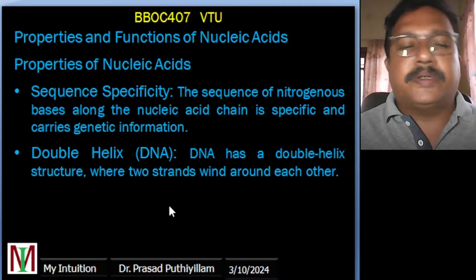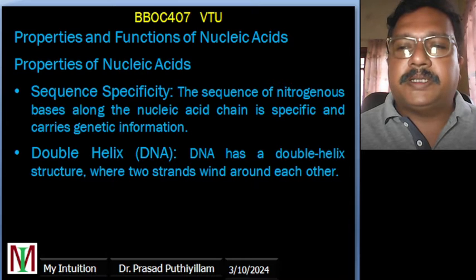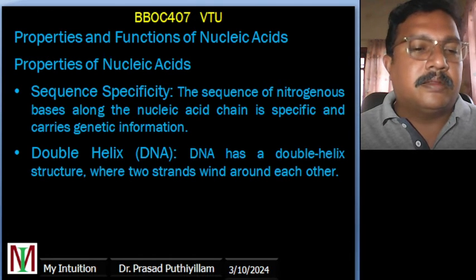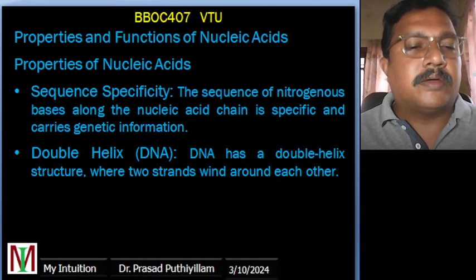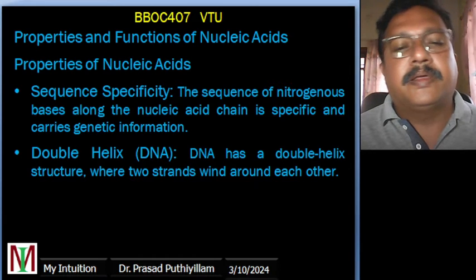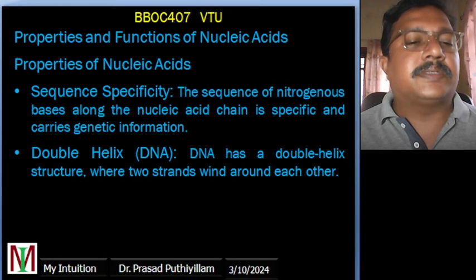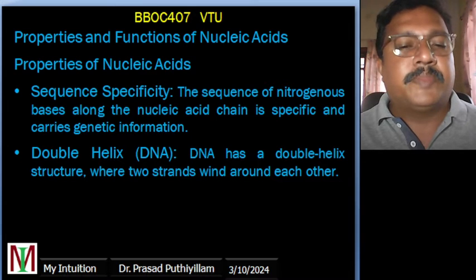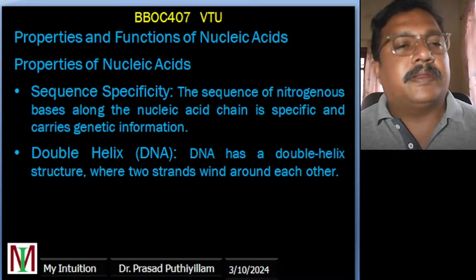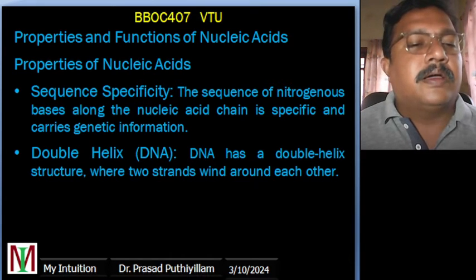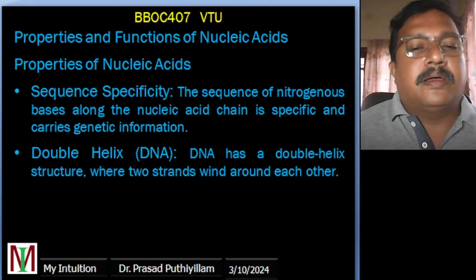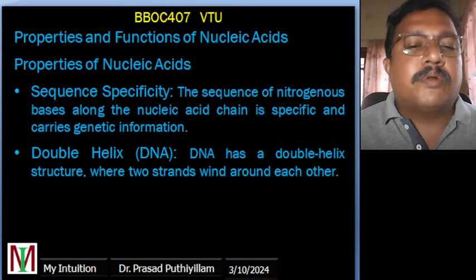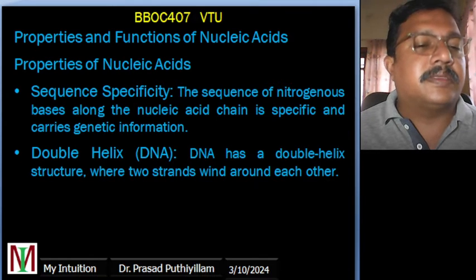The first property of nucleic acid is sequence specificity. Nucleic acids have a polymer structure made of nucleotides, and the order in which the nitrogenous bases — adenine, guanine, thymine, and cytosine — are arranged along the chain is very crucial. This specific sequence forms the genetic code, just like a unique language carrying instructions for building and maintaining an organism. Even a single base change can alter the genetic message with very significant consequences.